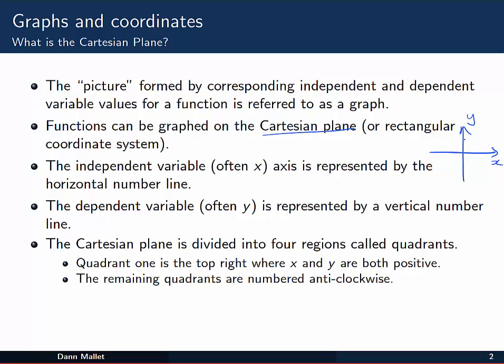The Cartesian plane formed by those two number lines or axes is divided into four regions which we call quadrants. Quadrant one is the top right where x and y are both positive, and then we name the remaining quadrants in a counterclockwise fashion: Q1, Q2, Q3, and Q4.